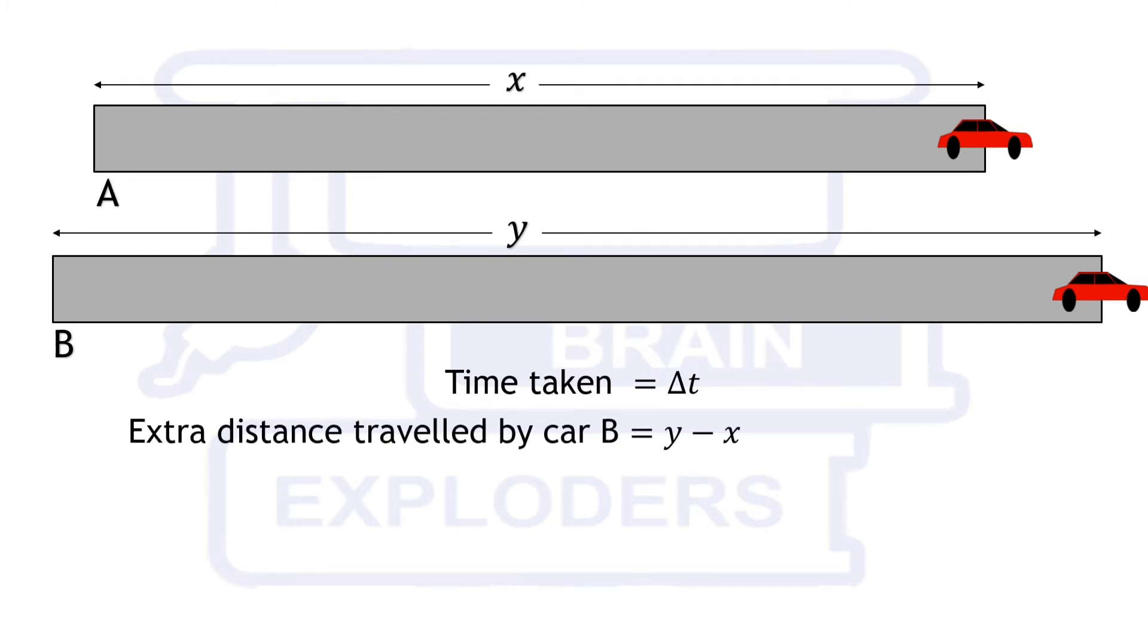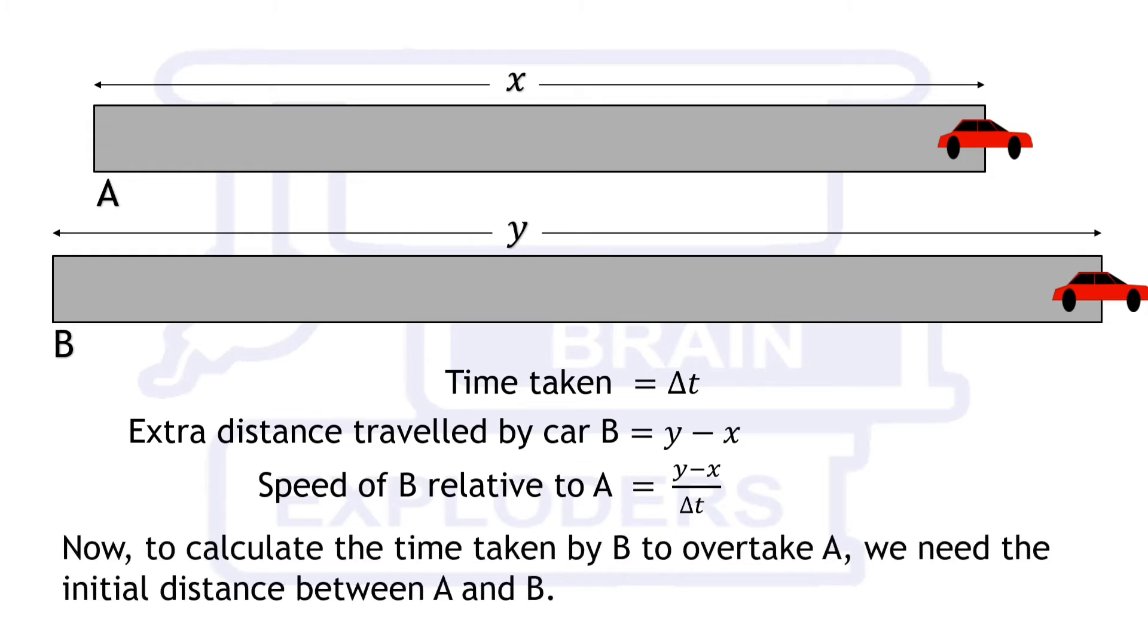Extra distance travelled by car B is y minus x. This means speed of car B relative to car A is (y - x)/Δt, because with respect to car A, this is the only distance travelled by car B.